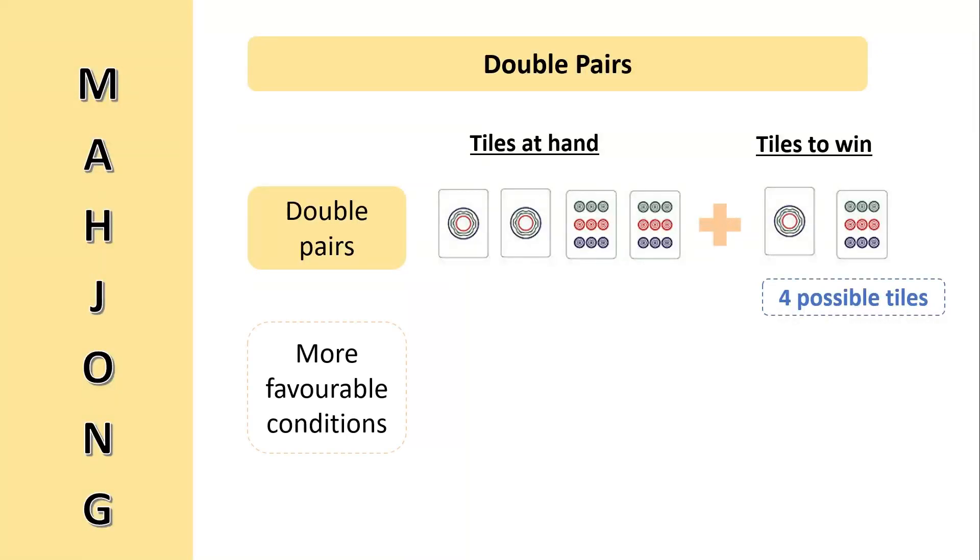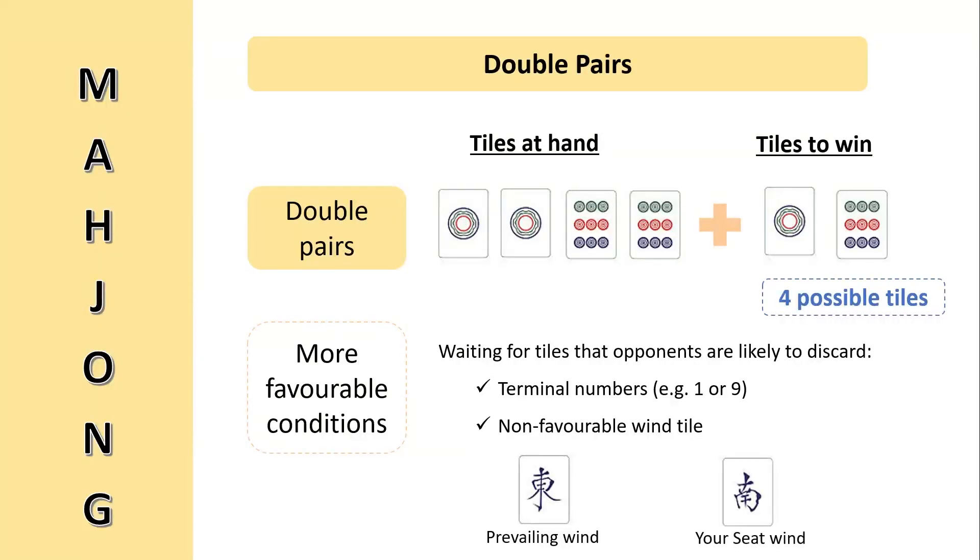However, there are additional factors that may make this hand better or worse. For example, if the taus that you are waiting for are terminal numbers, a non-fearable wind taus or any other types of taus that the opponents will likely discard, then your odds of seeing and grabbing those taus to win the game will be higher. For example, if the prevailing wind is east and your seat wind is south, it is unlikely that your opponent will want to keep a south wind taus and any other taus that are not theirs. Hence, if these are the taus that you are waiting to win the game, you may stand a better chance of grabbing them as your opponent will more likely discard them than keeping them.